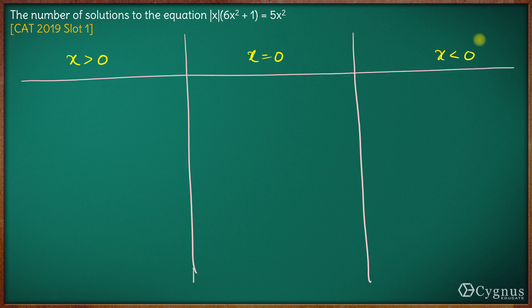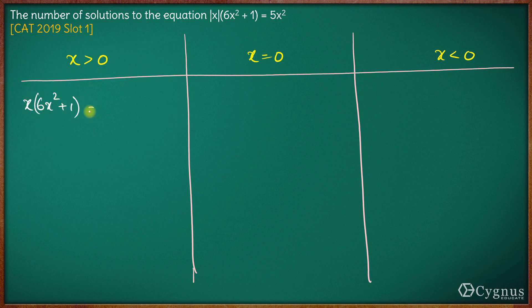Now taking the first case, if x is greater than 0, mod of x will be x. So we have x times (6x² + 1) which equals 5x². Since x is not 0, I can cancel out x. So we have 6x² minus 5x plus 1 equals 0.